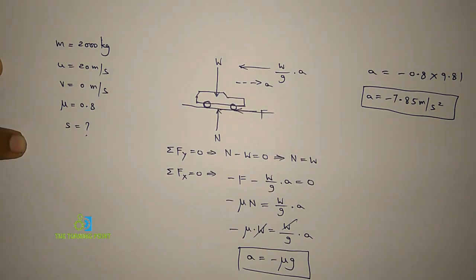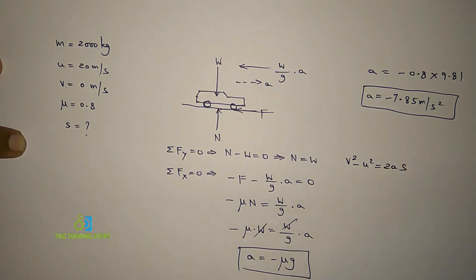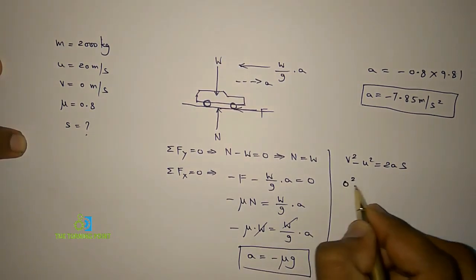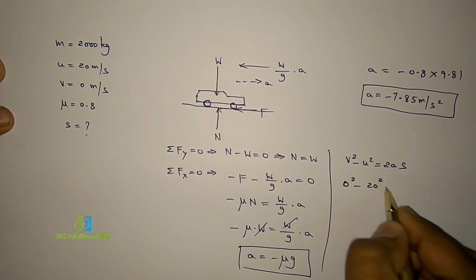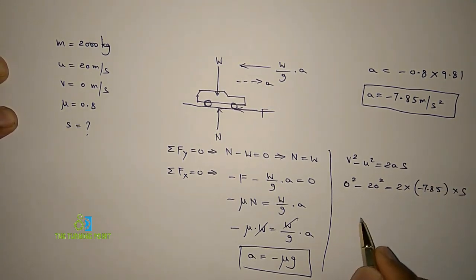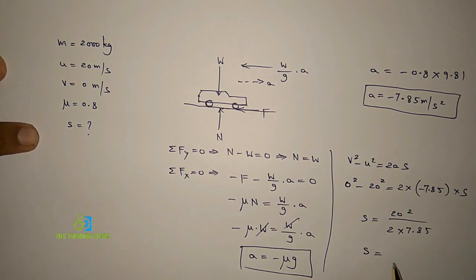So how to find the displacement? Here you have initial velocity, final velocity, and acceleration. From the relation v² - u² = 2as: final velocity is 0 and initial velocity is given as 20, so 0 - 20² equals 2 times a, which is -7.85, times s. This is 20² divided by 2 times 7.85. Here, minus minus gets canceled. From that, you can find the value of s. If you solve that, you will get around 25.48 meters.